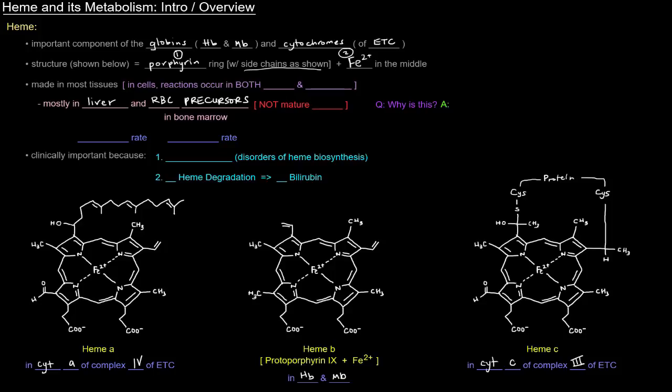In the bone marrow, in these red blood cell precursors, the heme synthesis occurs at a constant rate, and that's basically due to general globin turnover. Whereas in the liver, it occurs at a more variable rate depending on what's going on with the different heme proteins in the body, particularly CYP450, which we'll talk more about later.